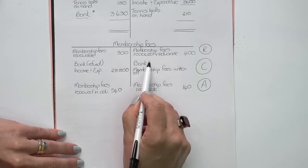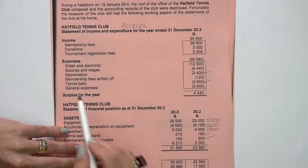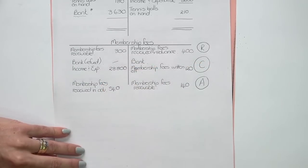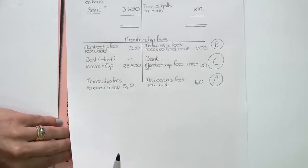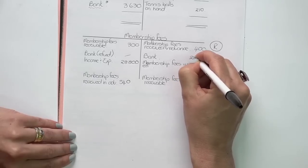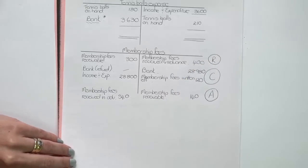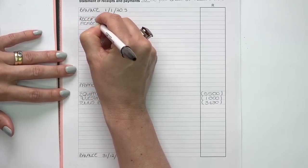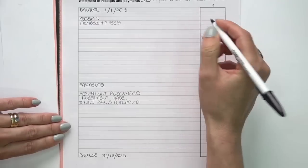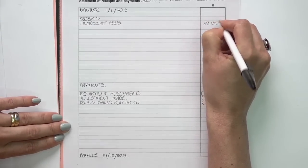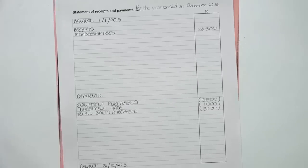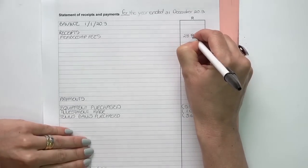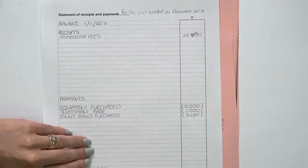The 28,800 is not the bank — the bank is the balancing amount we're looking for. We also had membership fees written off of 120, included as such. They don't mention anything about a refund anywhere in the question. So I can calculate the bank as my balancing amount of 28,980. That amount can earn me a mark in my statement of receipts and payments — membership fees received of 28,980, without brackets because it was money coming in.